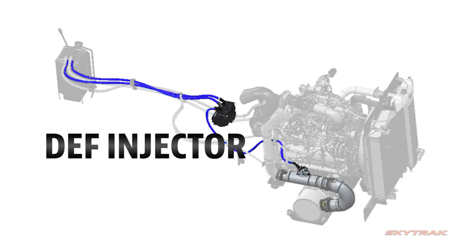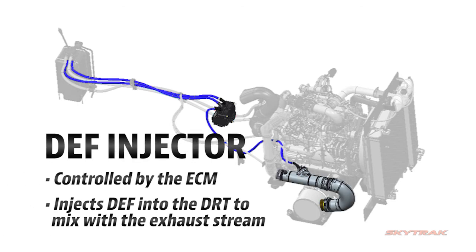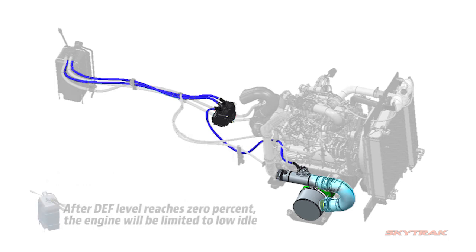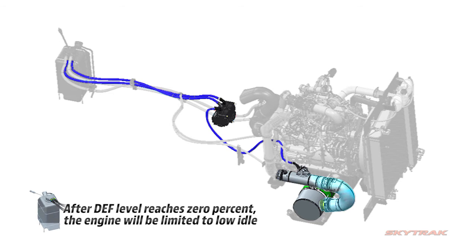The DEF pump utilizes some of this circulating flow to pressurize the line feeding the DEF injector. The DEF injector is controlled by the ECM to atomize DEF into the DRT to mix with the exhaust stream. To meet EPA requirements, the system will limit vehicle operation as the DEF level approaches zero.